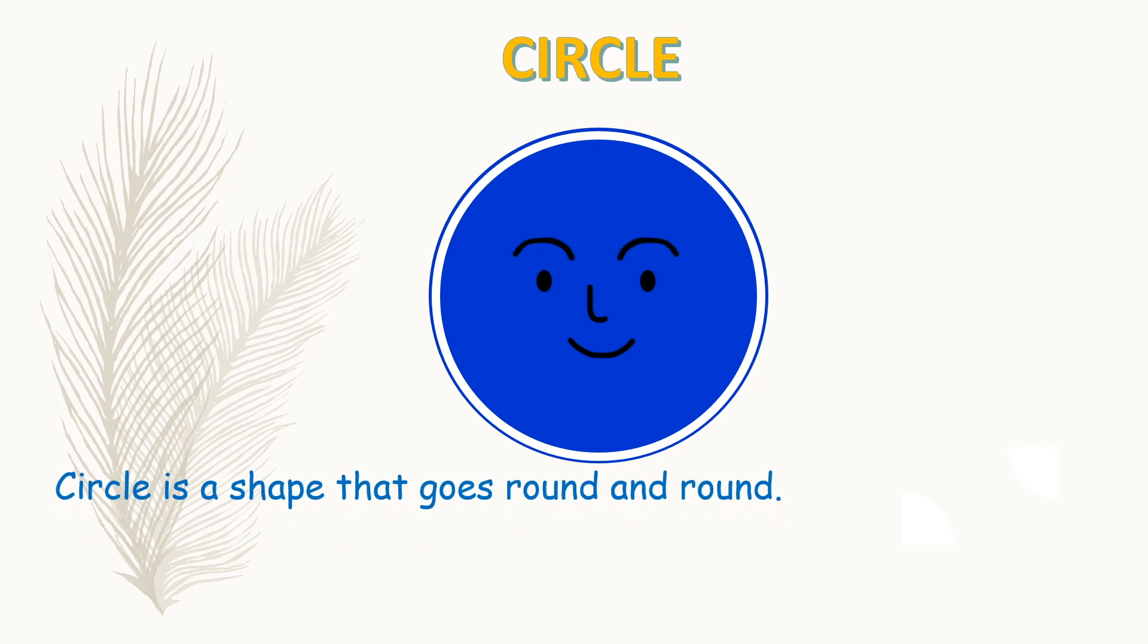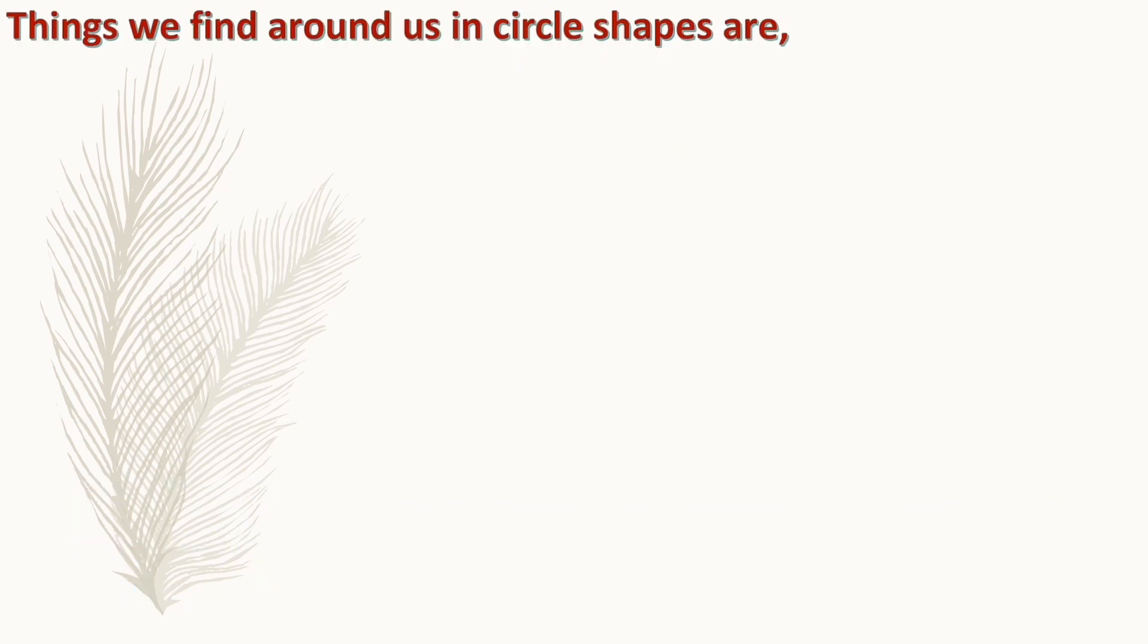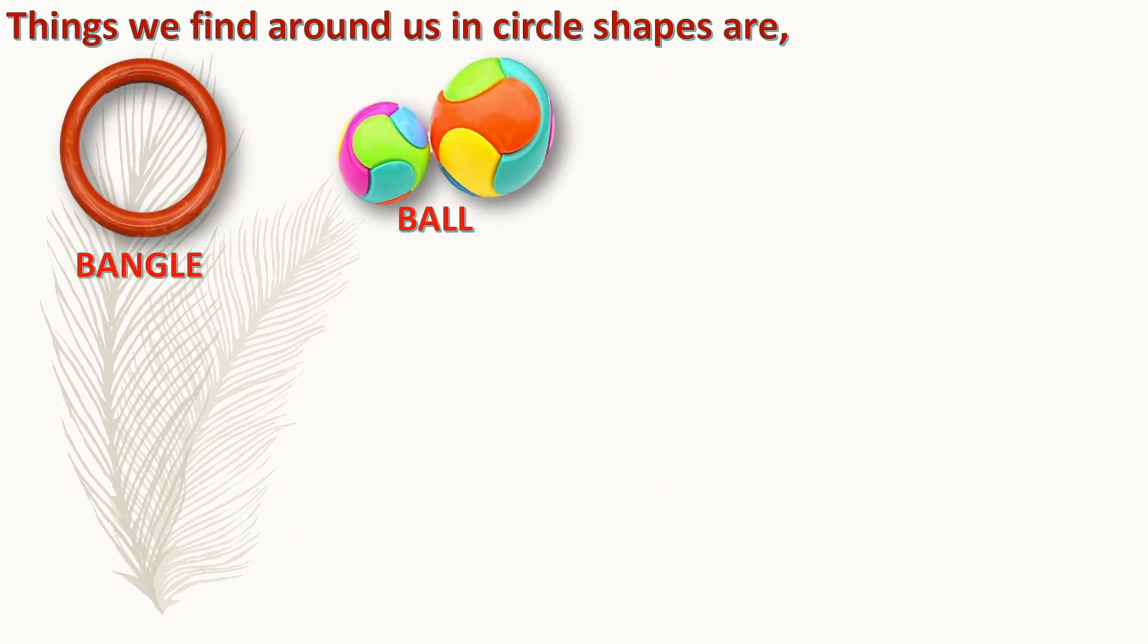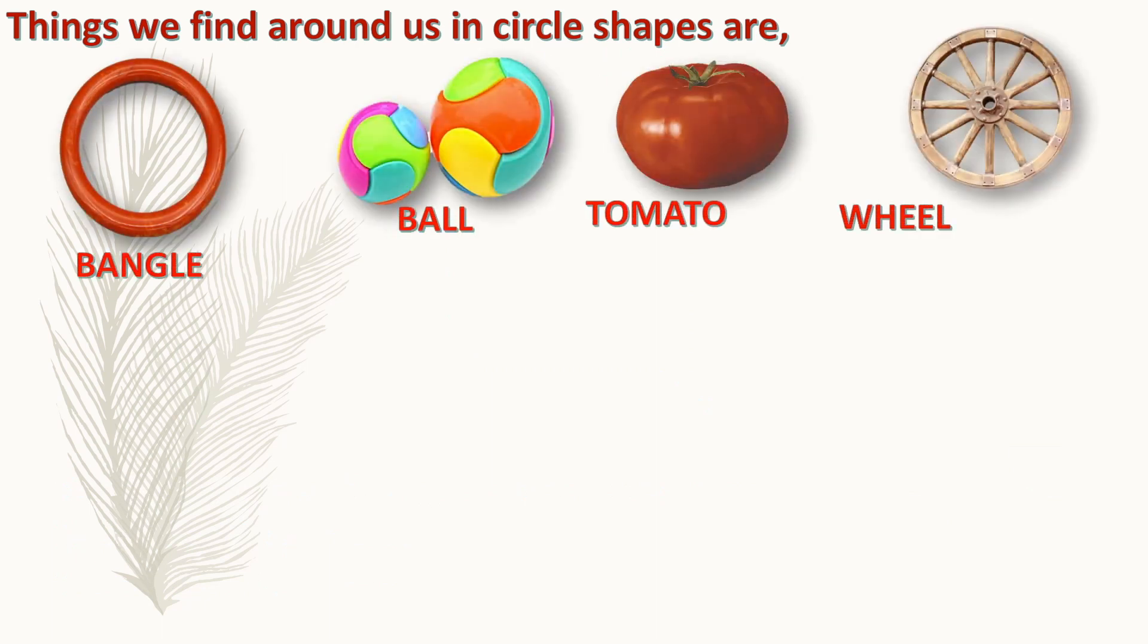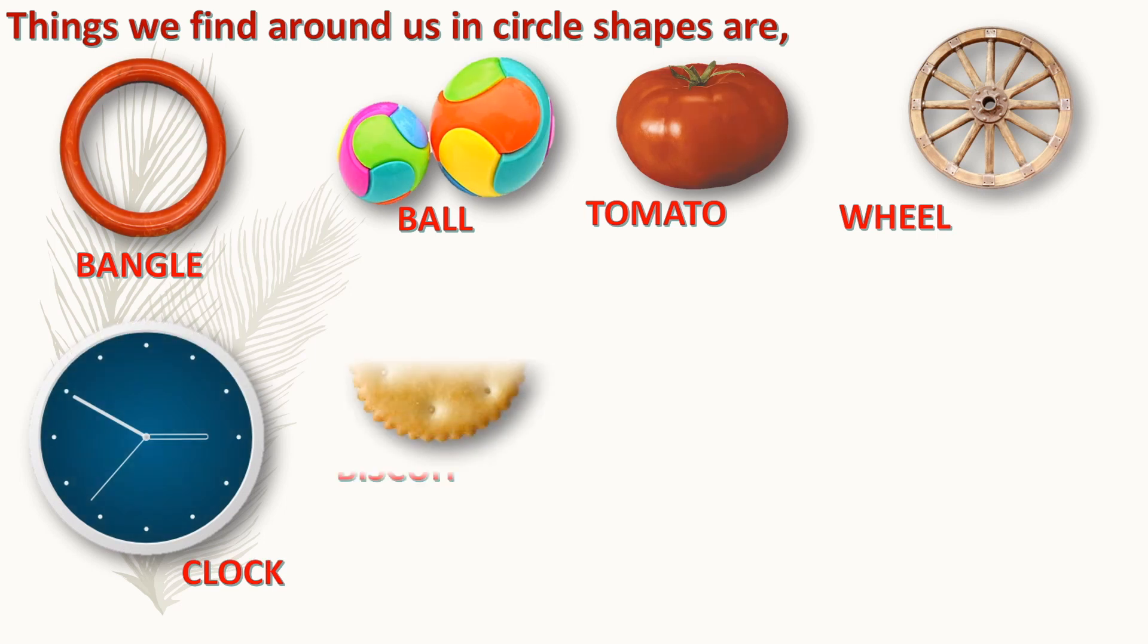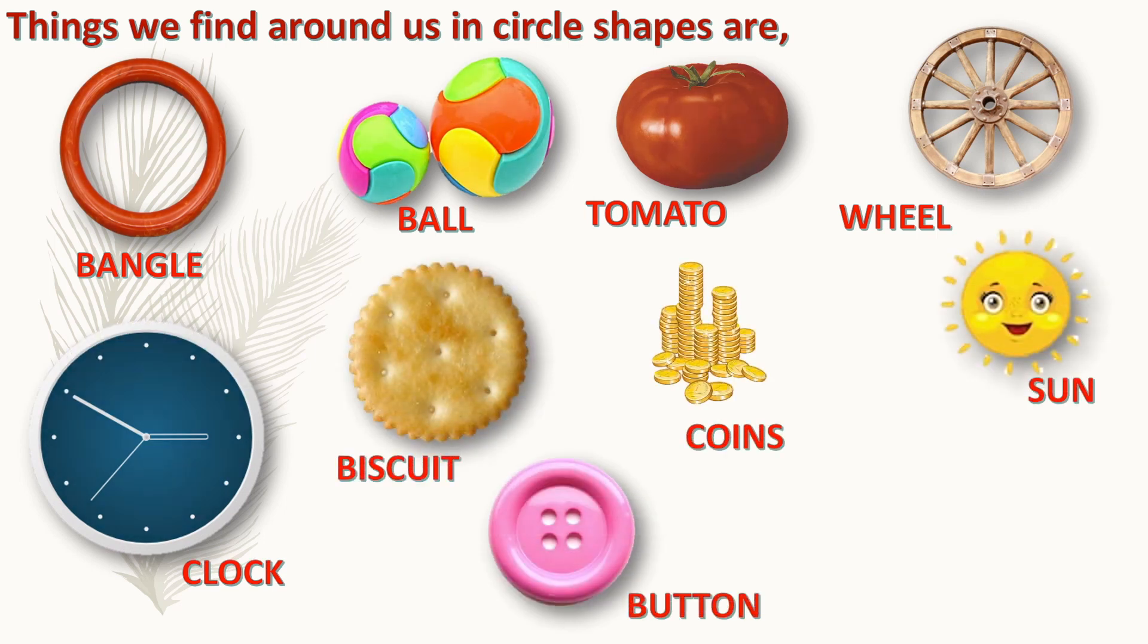Circle is the shape that goes round and round. It can be big or small. It can be found all around. Things we find around us in circle shapes are bangle, ball, tomato, wheel, clock, biscuit, coin, sun, button, and pizza. These are all circular shapes.